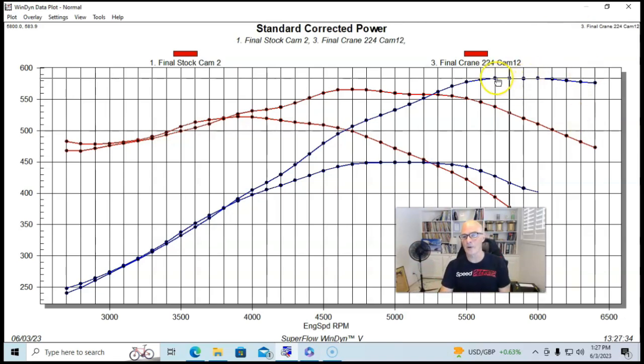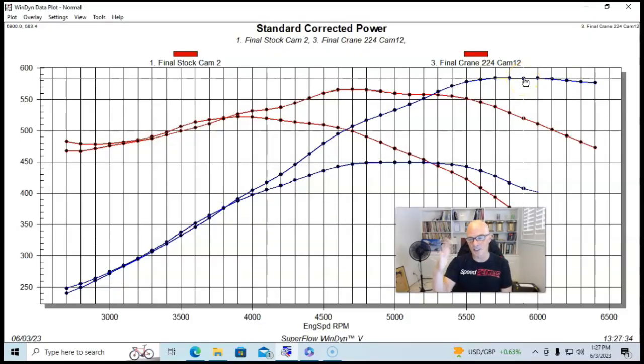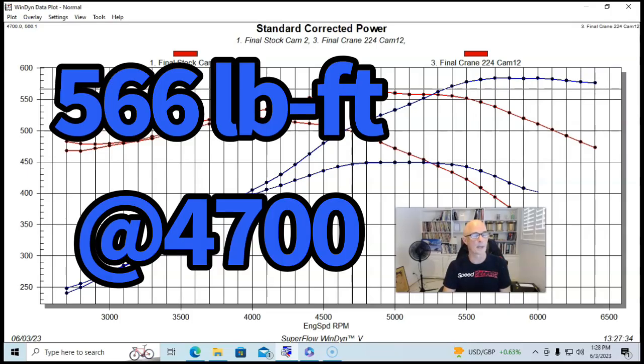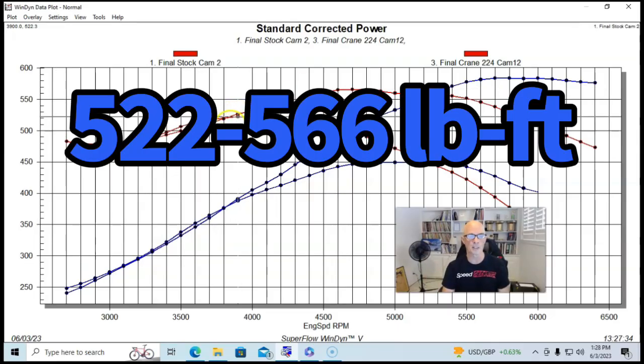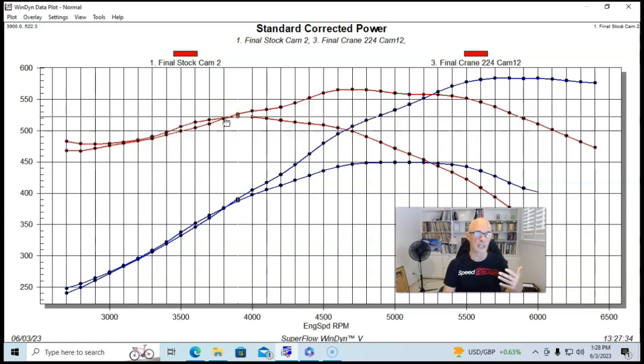It made peak power out here at 5700, 5800, 5900. All in that range, it's all within one horsepower or so. And then we could rev this thing all the way up to 6500. Peak torque happened here at 4700 RPM, where we're making 566 foot-pounds. So peak torque definitely up compared to the stock camshaft of only 522 foot-pounds. But I want you to look here at the 3900, 3800 RPM range and below, the 224 cam is actually starting to lose a little bit of power.